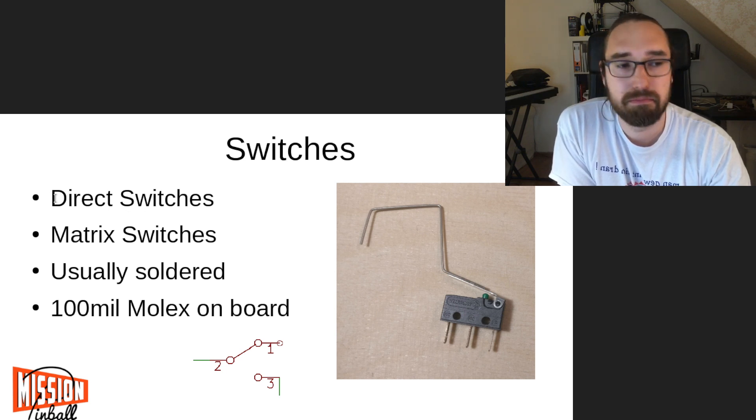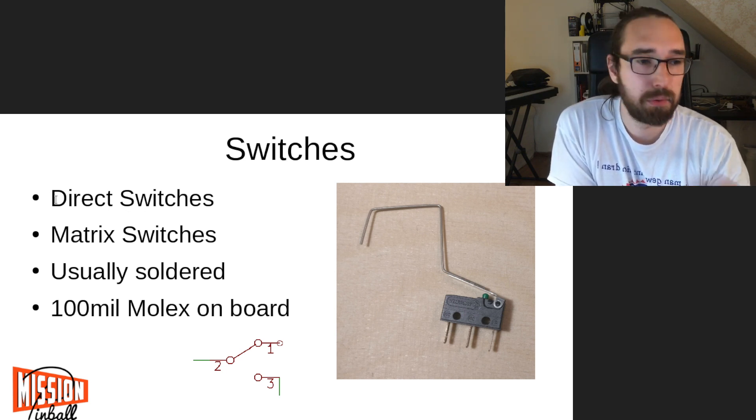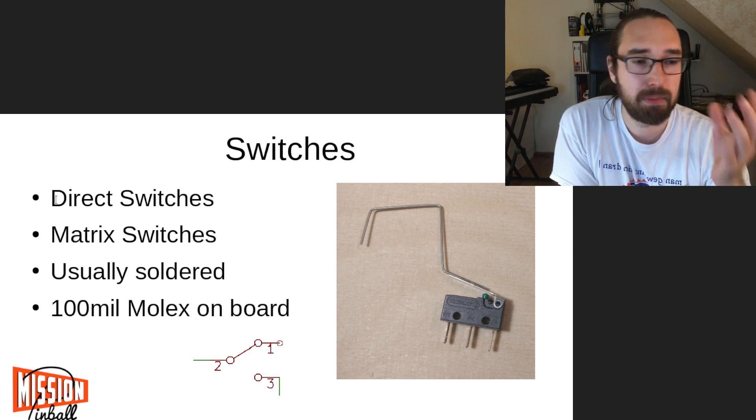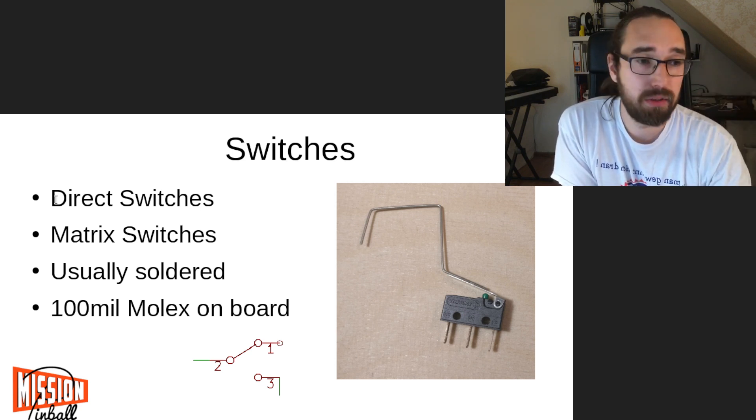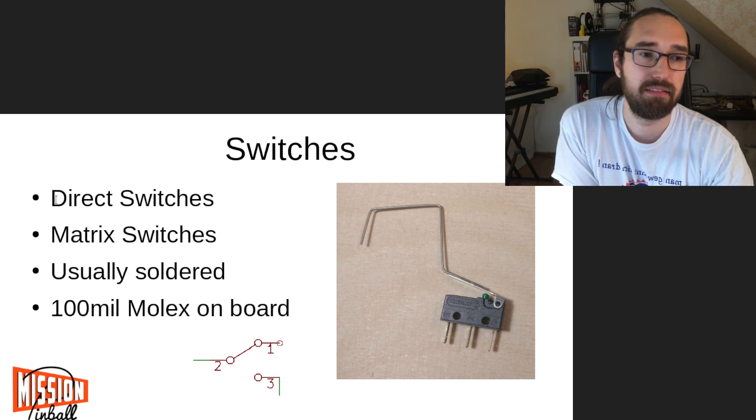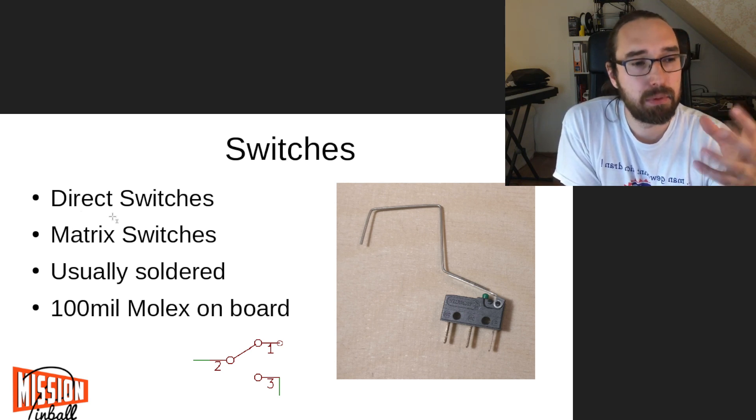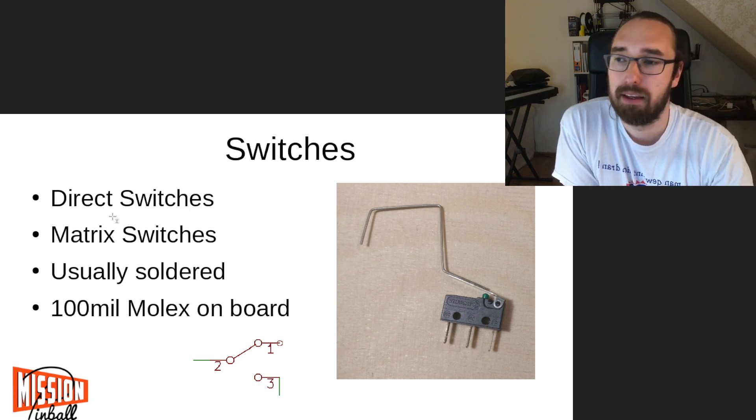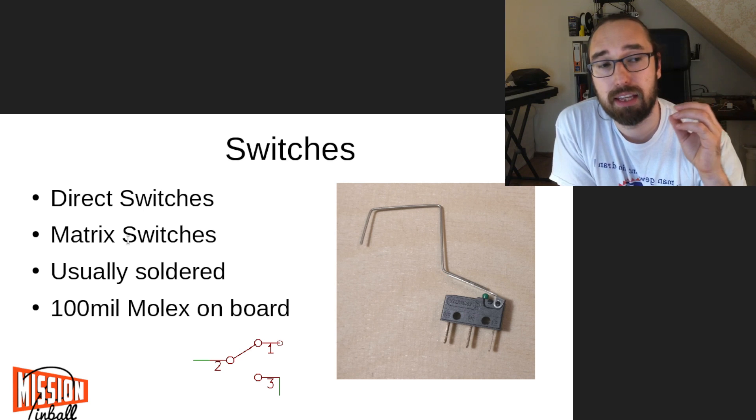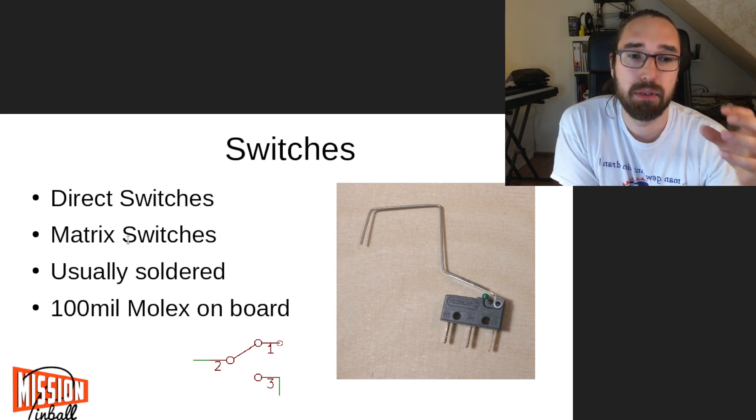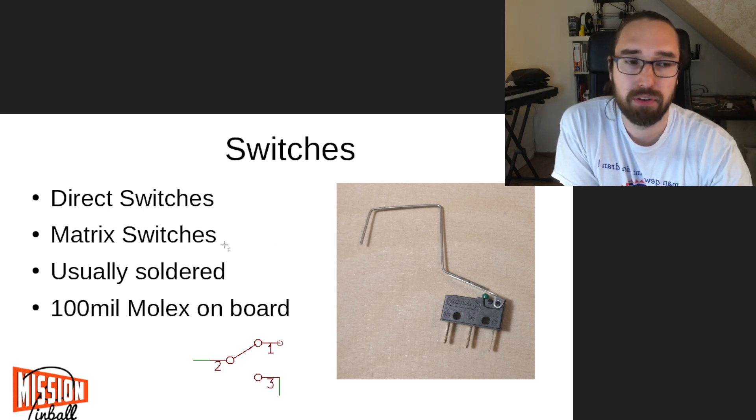Modern machines or even noteboard stuff like Stern Spike, P3ROC, FAST, they all run only direct switches. There are typically no switch matrices because inputs and CPUs became cheap. Originally we used matrices just to save wiring and CPU inputs. Now we'll show this in a minute.